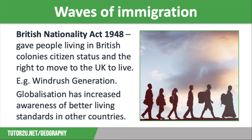Different waves of immigration have happened in the UK in the past. The British Nationality Act of 1948 gave people living in British colonies citizen status and the right to move to the UK to live. The government encouraged people from the Caribbean to come to the UK to live and work, to fill labour shortages after World War II. Between 1948 and 1970, nearly half a million people made this journey, becoming known as the Windrush Generation.